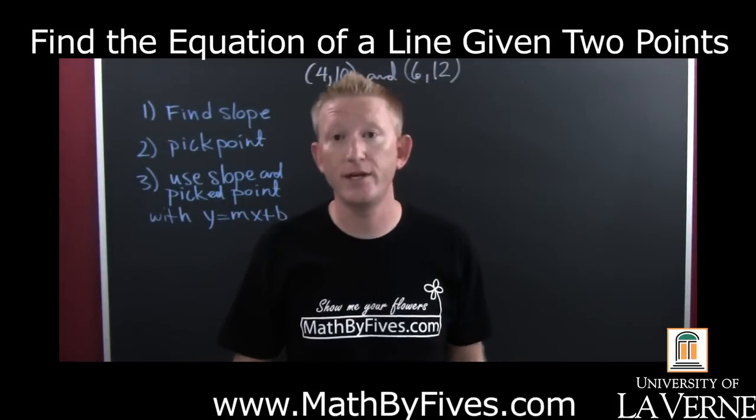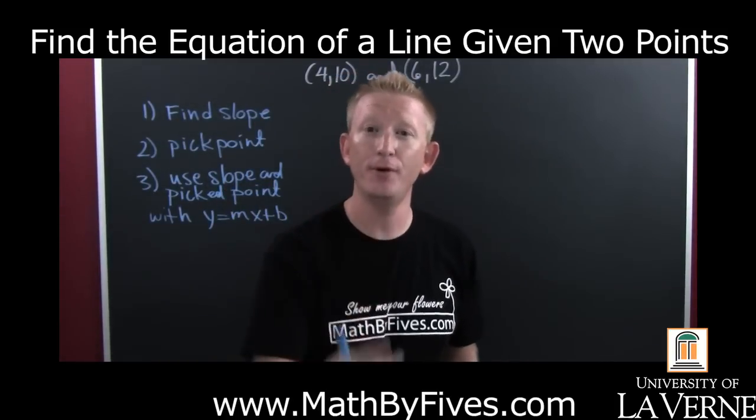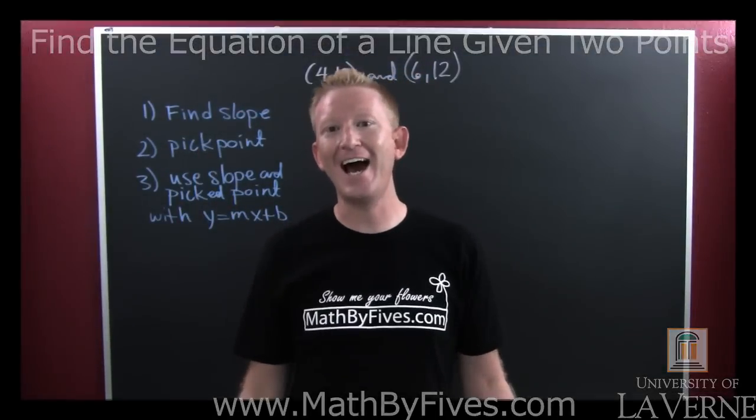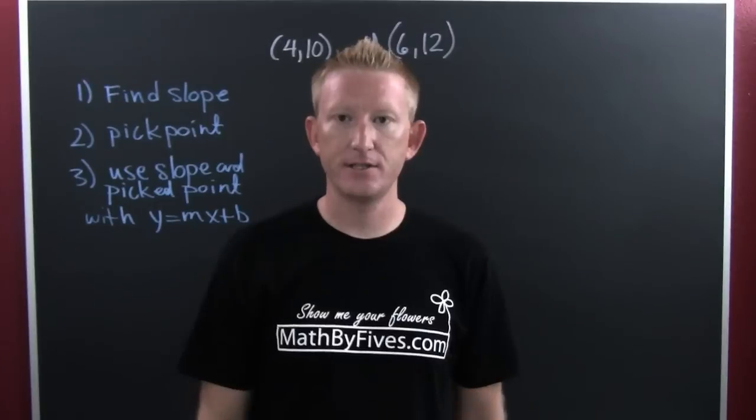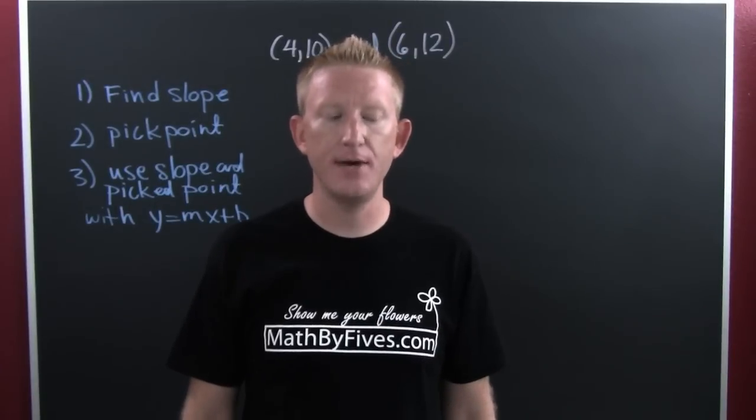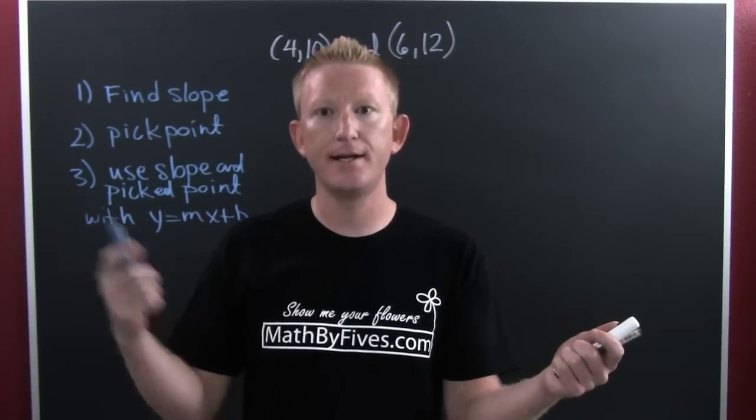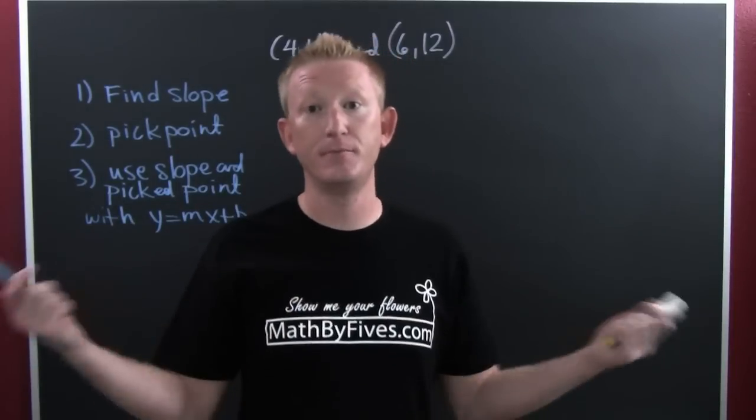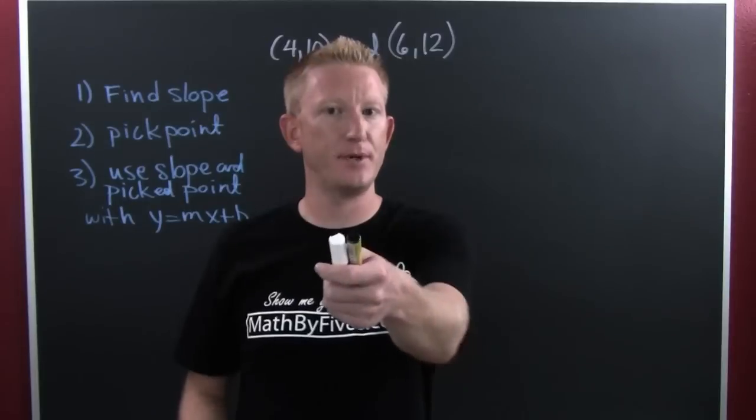Okay, now we need to find the equation of a line and they give us two points. We had a point and a slope, we used point-slope. Here they give us two points and we know we need a point and a slope. All we need to do now that we have two points is just pick one of them and we need to find a slope.